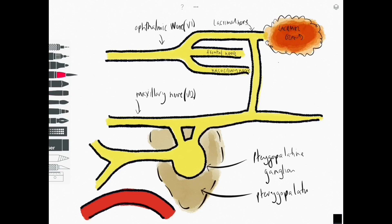So the pterygopalatine ganglion lives in a little depression called the pterygopalatine fossa which I've colored in here in a kind of brown color.